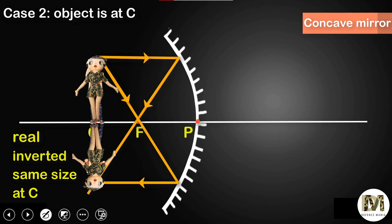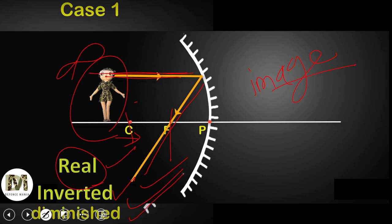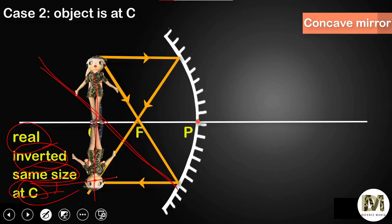Case 2: we place the object at the center. We studied that if any ray of light passes through the center, after reflection it goes back to the center. So the image forms at the center itself. The image is real, inverted, and of the same size as the object. Notice that the size is gradually increasing — in case 1 it was diminished, and now in case 2 it is the same size.